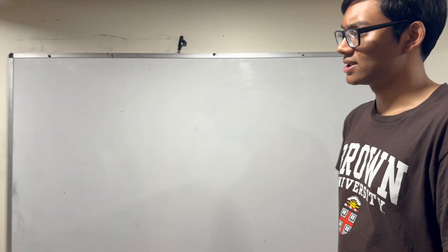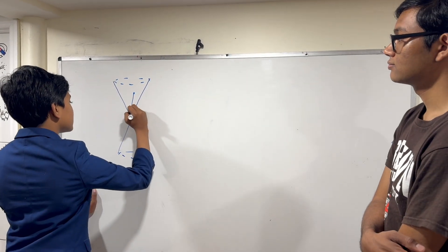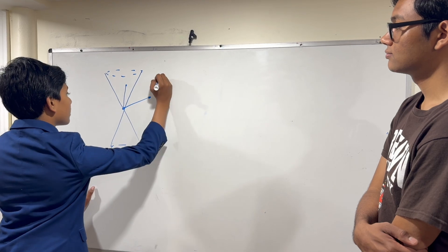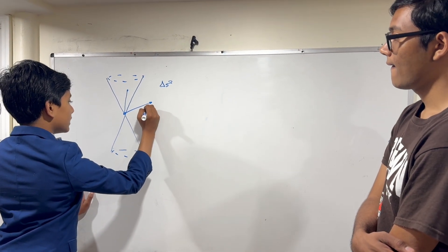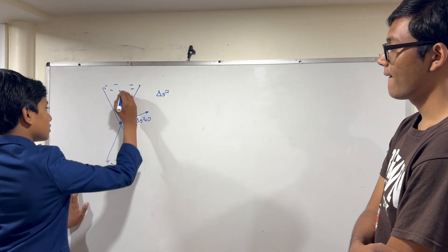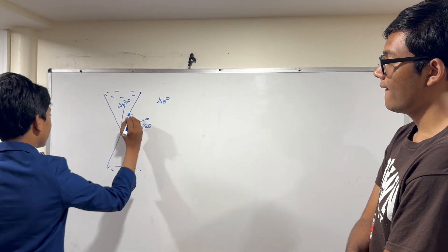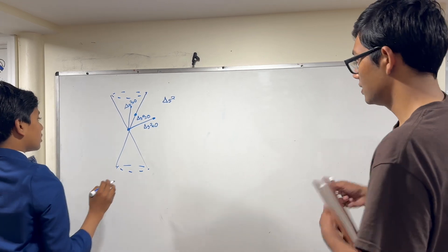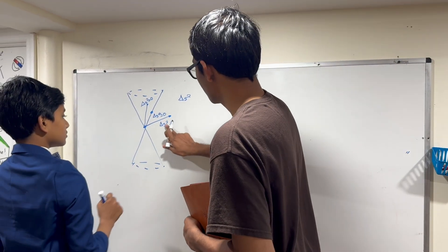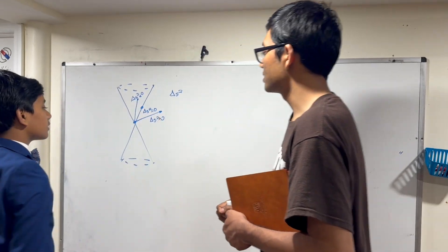So today we're continuing our discussion on general relativity. What did we discuss last time? So last time we discussed time-like paths, space-like paths, and the space-time interval, where the space-time interval squared is less than zero for time-like, greater than zero for space-like, and if you take a light-like path, it's exactly equal to zero. So to flip this: for space-like paths this is positive, for time-like it's negative.